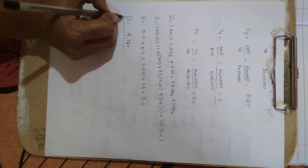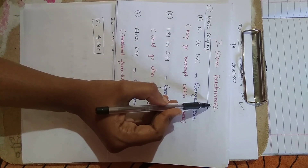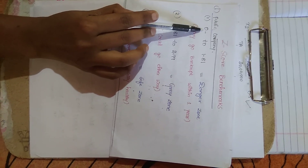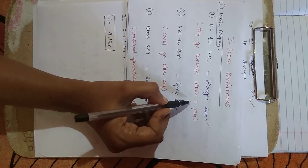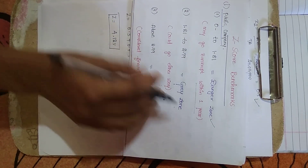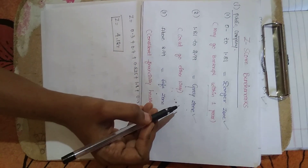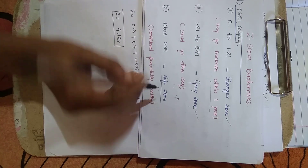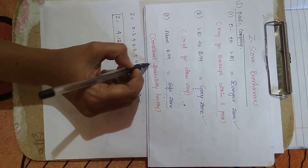We also discussed the benchmarks for deciding the position of a company. For a public company: if the answer is from 0 to 1.81, the company is in the danger zone and may go into bankruptcy within one year. If from 1.81 to 2.99, it is in the gray zone. If above 2.99, the company is financially sound and safe.